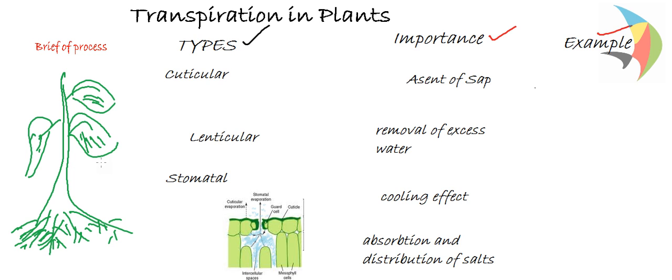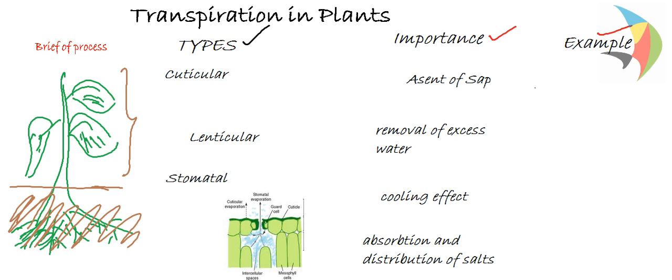The root structure forms the below-soil portion, and the stem and leaves form the aerial part of the plant surface. Transpiration is defined as a process by which the plant loses water in the form of vapors from the aerial parts of the plant.